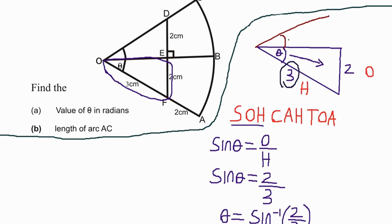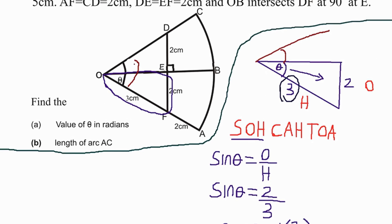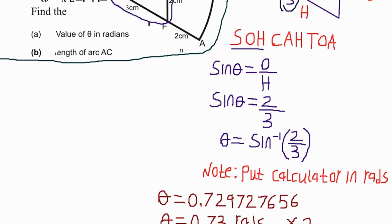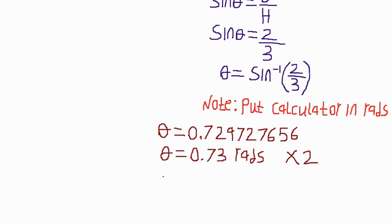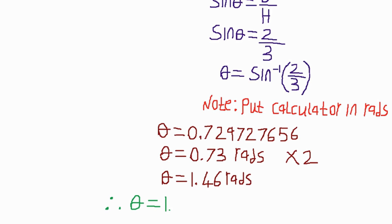Looking at the diagram, we have two similar triangles. If one angle is 0.73 radians, the other is also 0.73 radians. So we multiply 0.73 by 2, which gives 1.46 radians. Therefore, theta equals 1.46 radians. That is our actual answer for Part A.